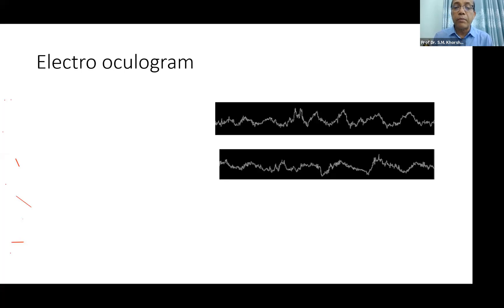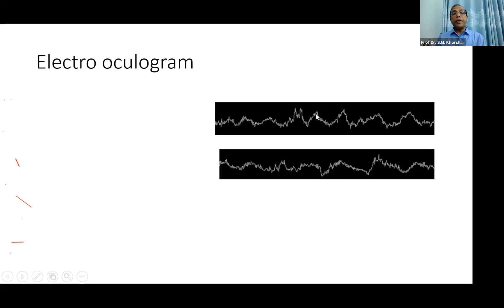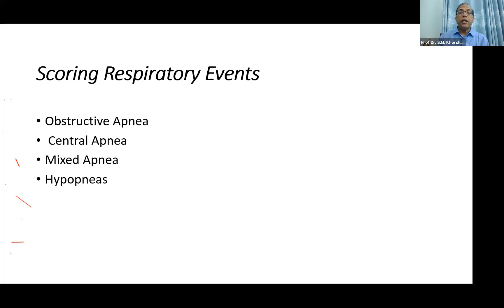The electrooculogram shows rapid eye movements. Rapid eye movements indicate the patient's sleep is so light that he is almost awake, and when this corresponds with an EEG event, it is scored as awake when scoring respiratory events in obstructive sleep apnea.